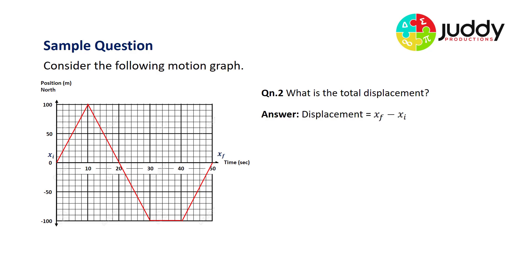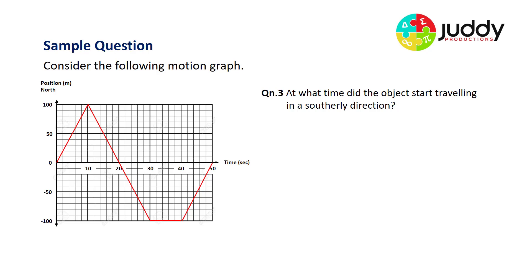Question two: what's the total displacement? Displacement compares final position to initial position. The final position at time 50 is zero and the initial at time zero is also zero, so this graph has zero displacement. Question three: at what time did the object start traveling in a southerly direction? Positive gradients represent northerly movement, so negative gradients represent southerly. The first negative gradient begins at 10 seconds — the answer is 10 seconds.